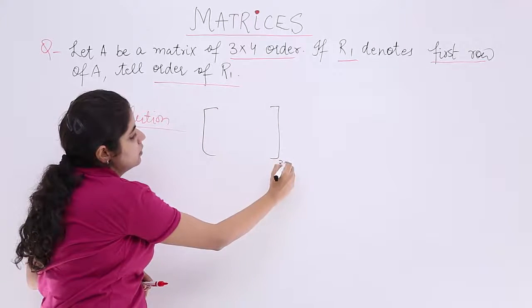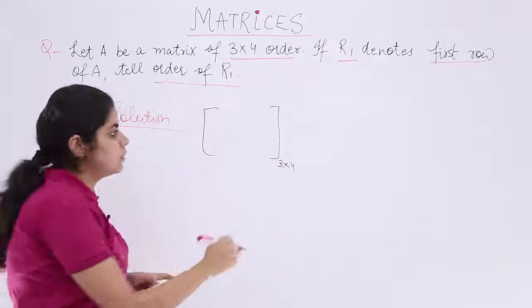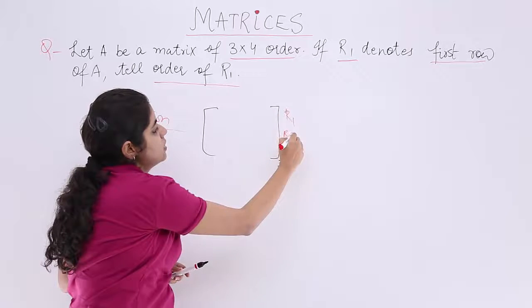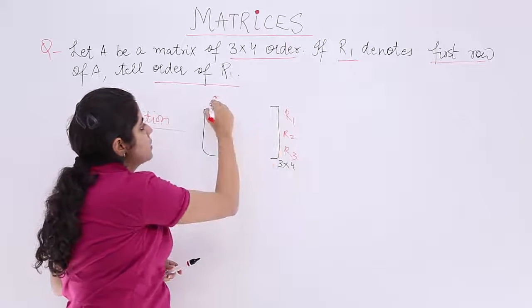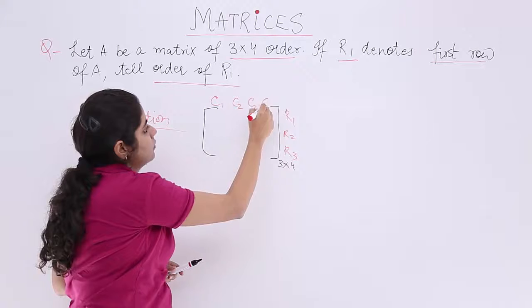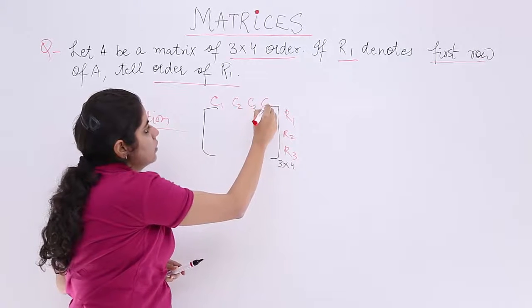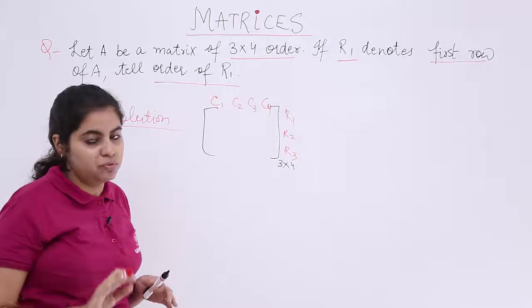3 rows, 4 columns. Let's draw a blueprint of it. It is 3 rows and it is 4 columns. Right? 3 rows and 4 columns.